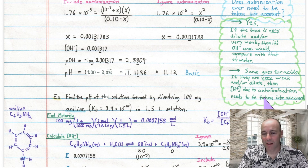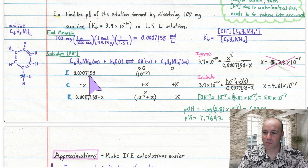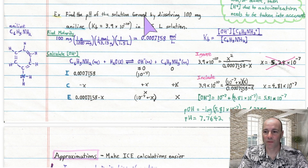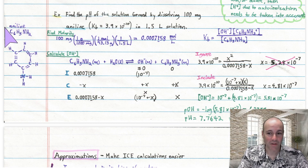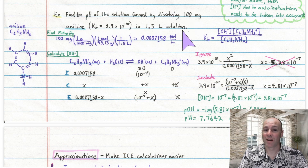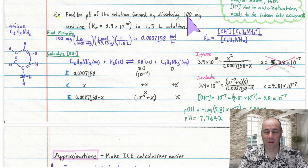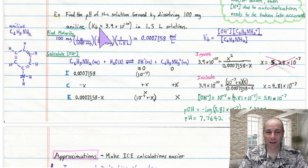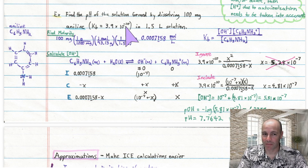Let's see an example where autoionization does need to be taken into account — the last problem in the video. Find the pH of a solution formed by dissolving 100 milligrams of aniline (a weak base) with a Kb of 10⁻¹⁰ in 1.5 liters of solution. 100 milligrams is not that much — that's 0.1 gram — so it's going to be very dilute. And with such a small equilibrium constant, there won't be many product hydroxides at equilibrium.